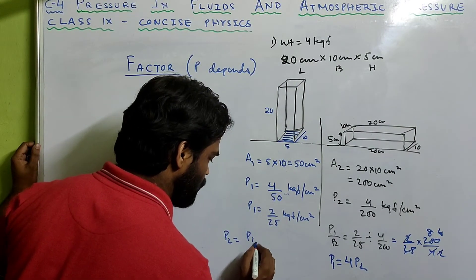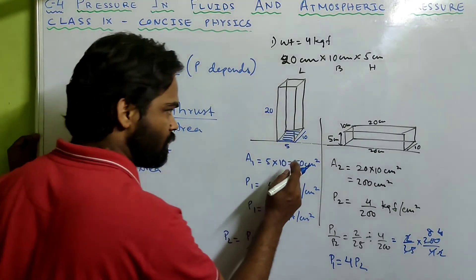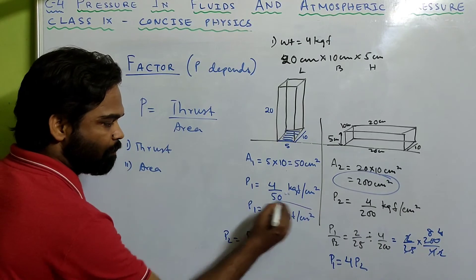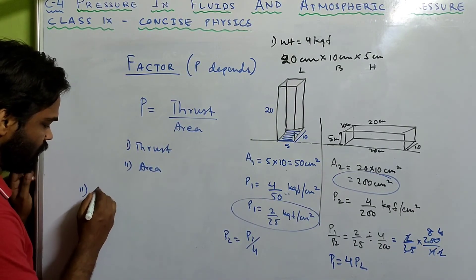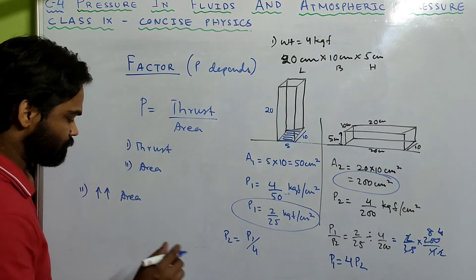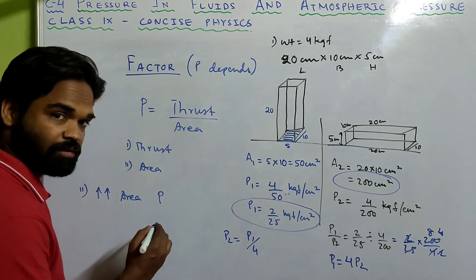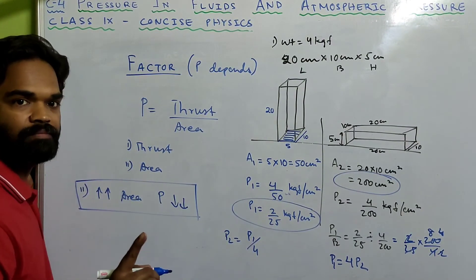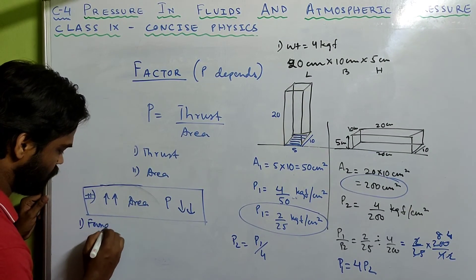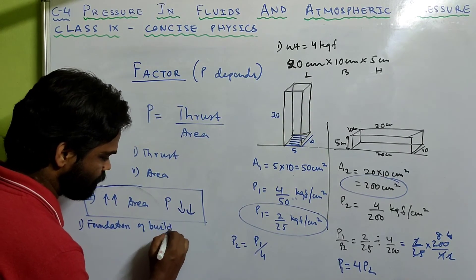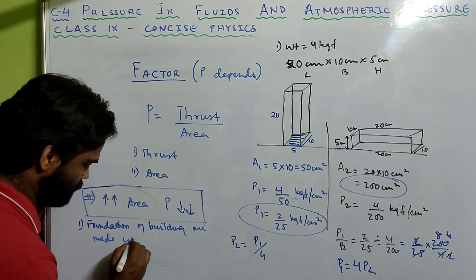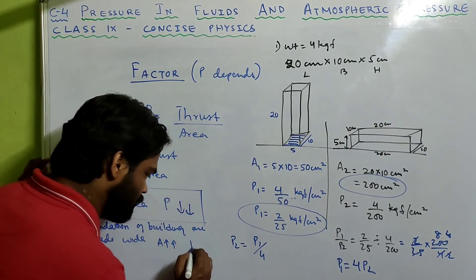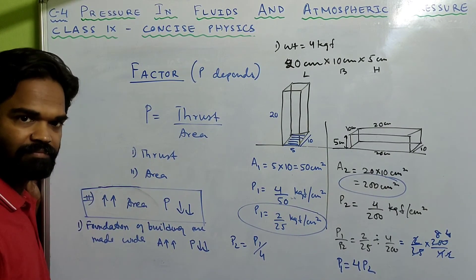This means P2 equals P1 divided by 4. Look carefully — if you increase the area, the pressure decreases. P1 is 4 times P2, so increasing the area of contact on which the thrust is applied decreases the pressure. This is the reason why foundations of buildings are made wide — by increasing the area, the pressure applied by the building on the ground is less.